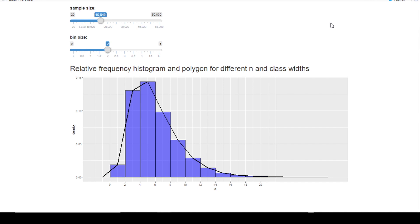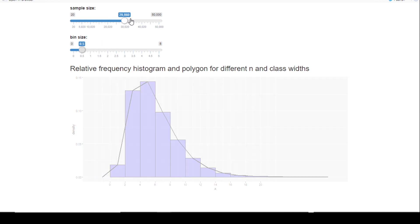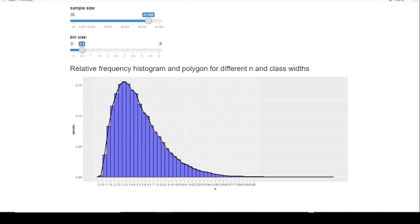We can increase the sample size even further and decrease the bin size more. Okay, now with an N of almost 44,000 and a bin size of 0.5, we can see that the polygon is now approaching a smooth curve.